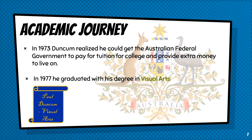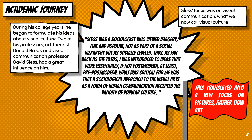In 1973, Duncan realized he could get the Australian federal government to pay for tuition for college and provide extra money to live on. So he went to college, and in 1977 received his degree in visual arts. During his college years, he began to formulate his ideas about visual culture. Two of his professors — art theorist Donald Brook and visual communication professor David Celeste — had a great influence on him.